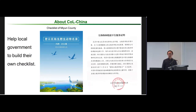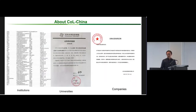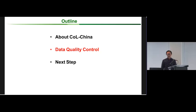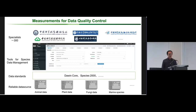We also help local governments build their own checklists for protection. Many institutions, universities, and companies also use our checklist — for example, the company TikTok in China uses the checklist for their citizen science project. COL China is popular, and one of the most important reasons is the high quality.